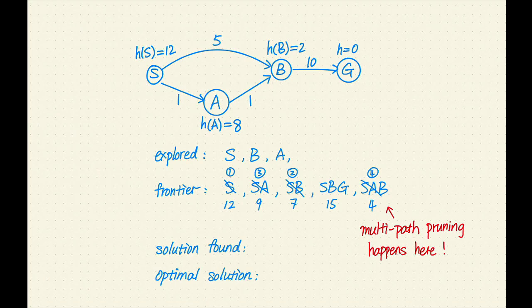Let's continue. Next, S-B-G is the only path on the frontier. Let's remove G from the frontier and add G to the explored set. G is a goal. Let's stop and return the solution S-B-G with a cost of 15.